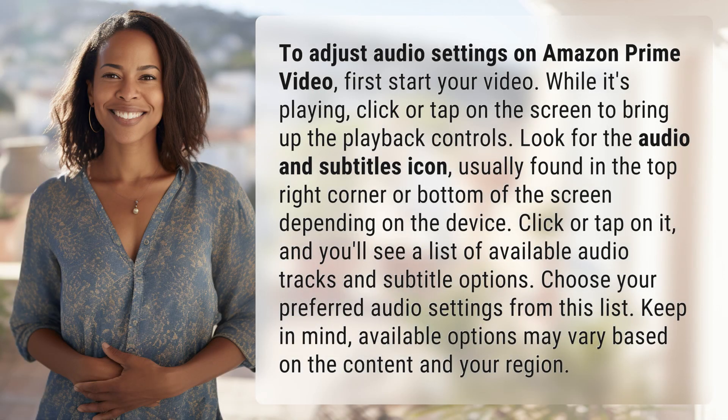To adjust audio settings on Amazon Prime Video, first start your video. While it's playing, click or tap on the screen to bring up the playback controls. Look for the audio and subtitles icon, usually found in the top right corner or bottom of the screen depending on the device.